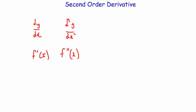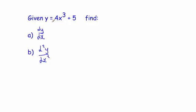Let's have a look at an example. Here we've got y = 4x³ + 5 and the question asks to find (a) dy by dx and (b) d²y over dx squared.